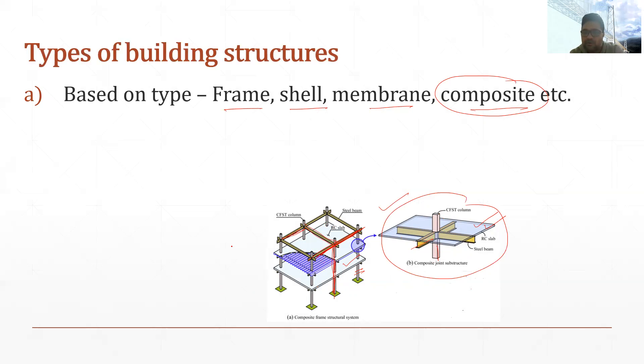In the building, the vertical member is called a column, all the horizontal members you see are called beams, and the plate-like element is called the slab.